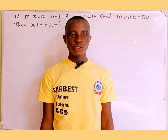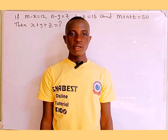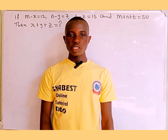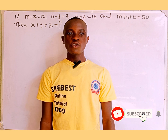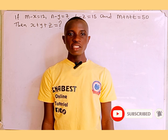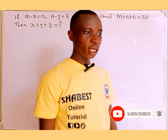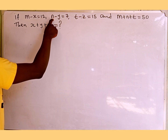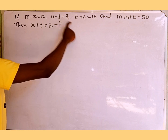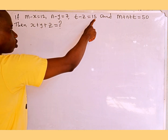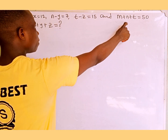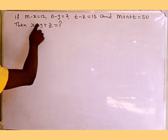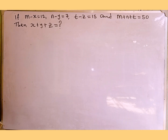Hi guys, welcome back to Shabez Online Tutorial. In today's tutorial we're going to learn how to provide a solution to the question on the board. If you are new here, consider subscribing to my channel and also follow me on Facebook and Instagram at Shabez Online Tutorial. The question reads: if m minus x equals 12, n minus y equals 7, t minus z equals 15, and m plus n plus t equals 50, then find the value of x plus y plus z. Let's get started.